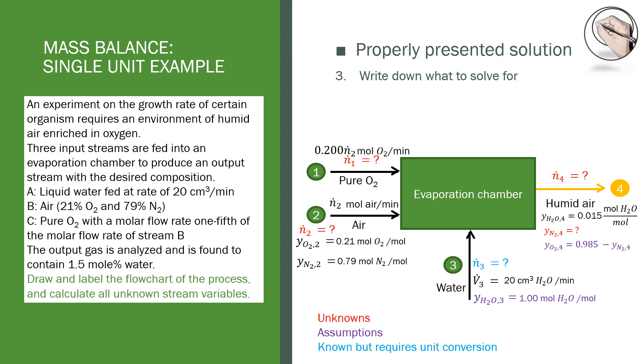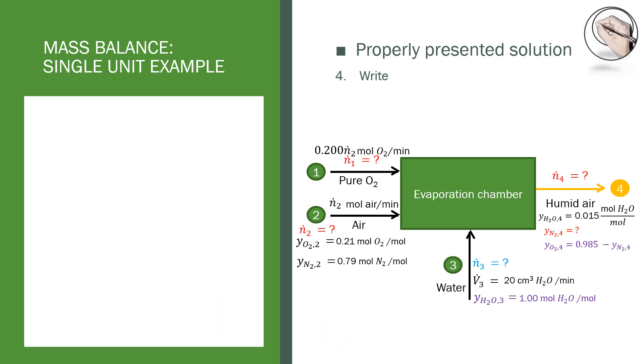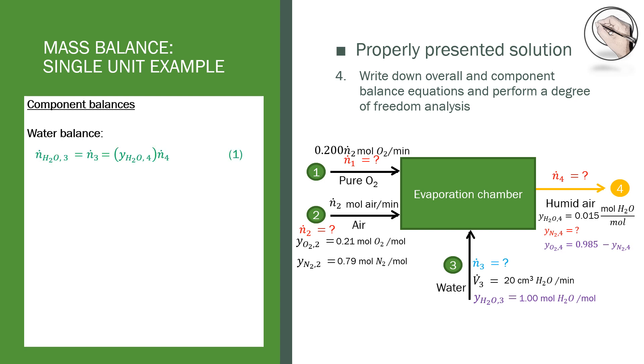The fourth step is to write down all the component and overall balance equations to do a degree of freedom analysis. Since we have three components, we will have three component balances: water, nitrogen, and oxygen, in the form of input equals output. Adding these three balances gives us the overall equation. That means that we have a total of three independent equations with four unknowns, equating to a degree of freedom of one.